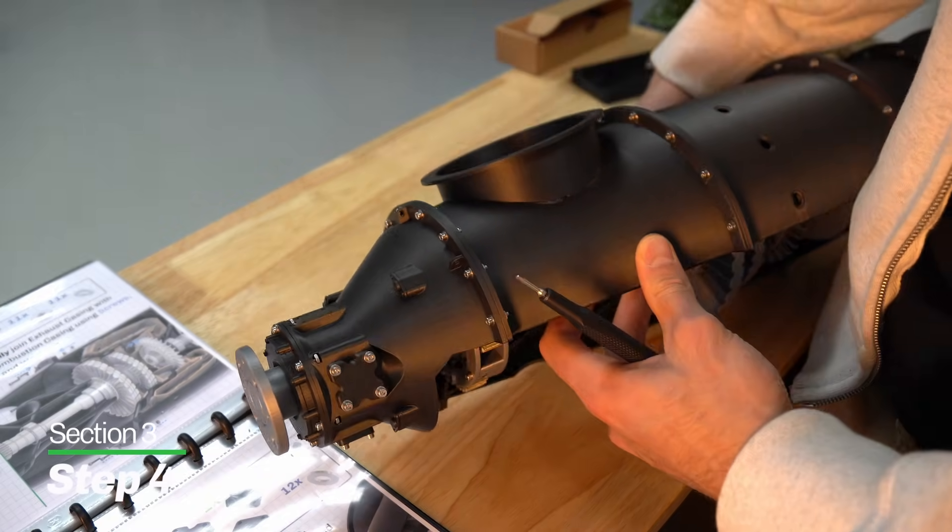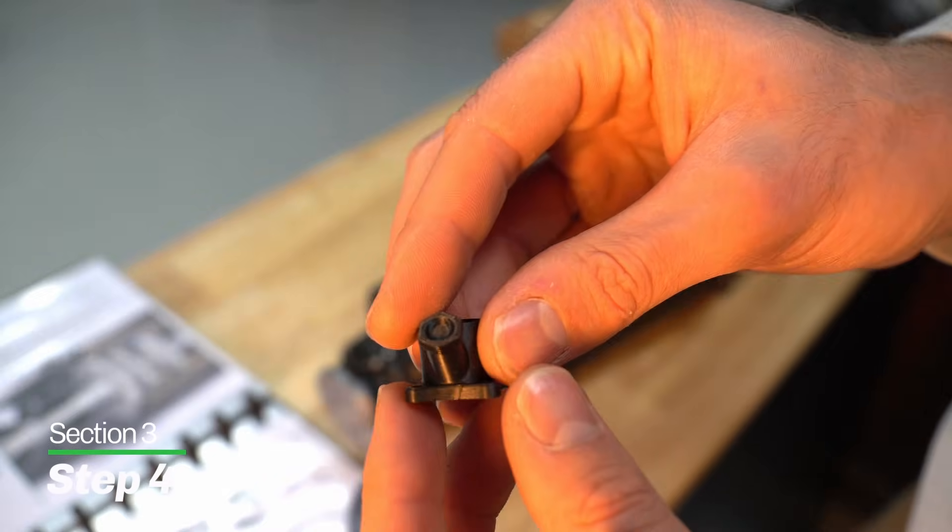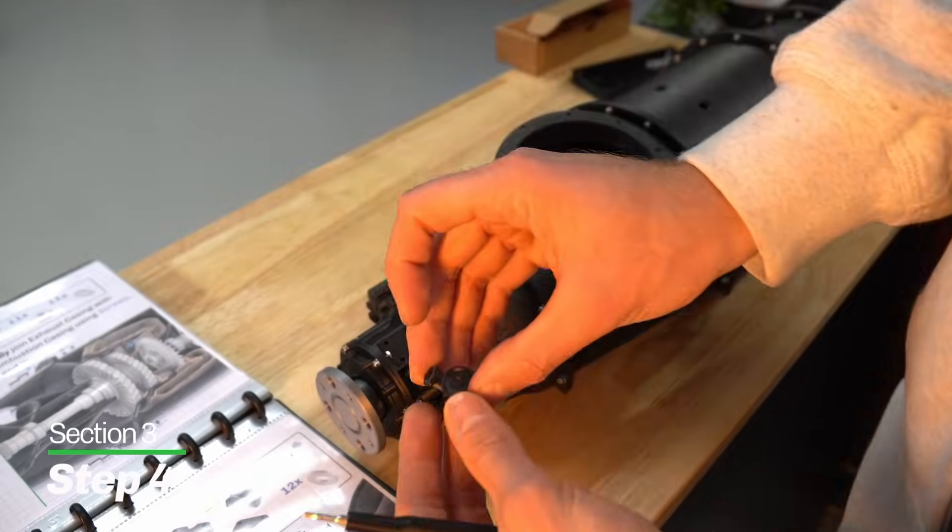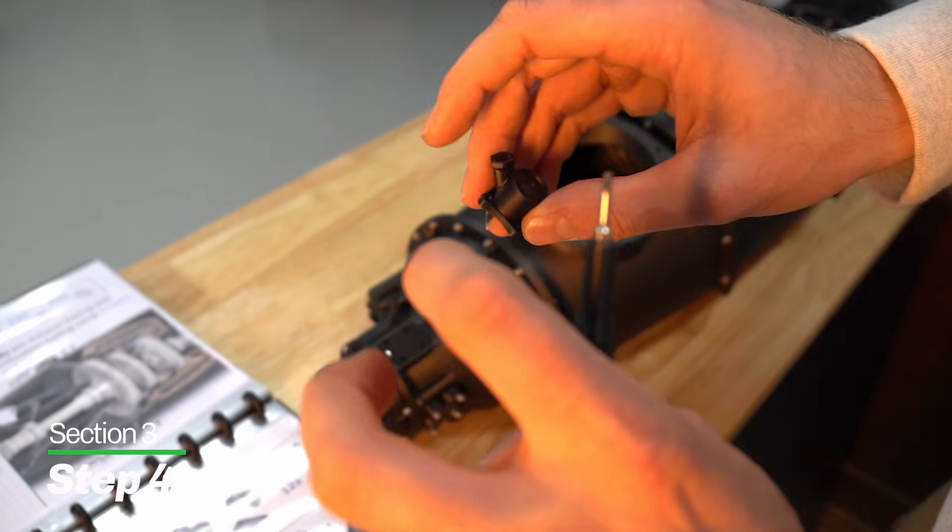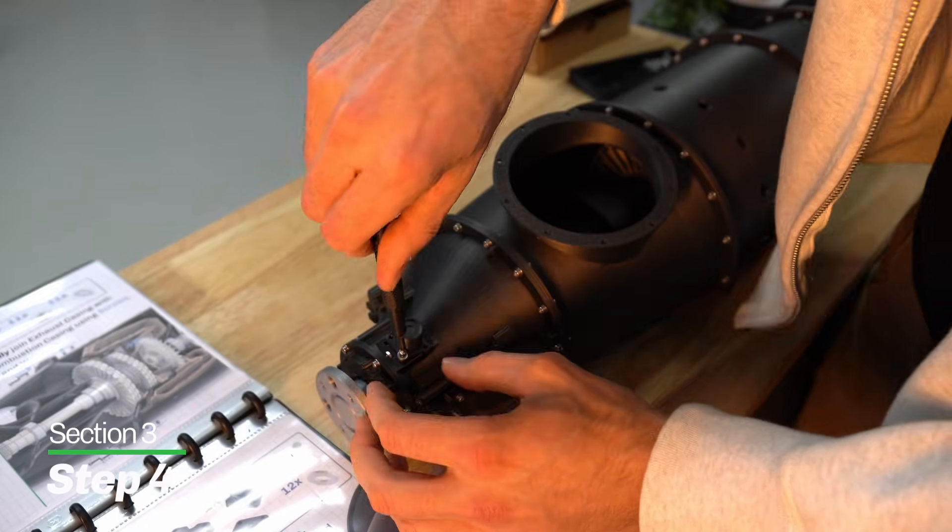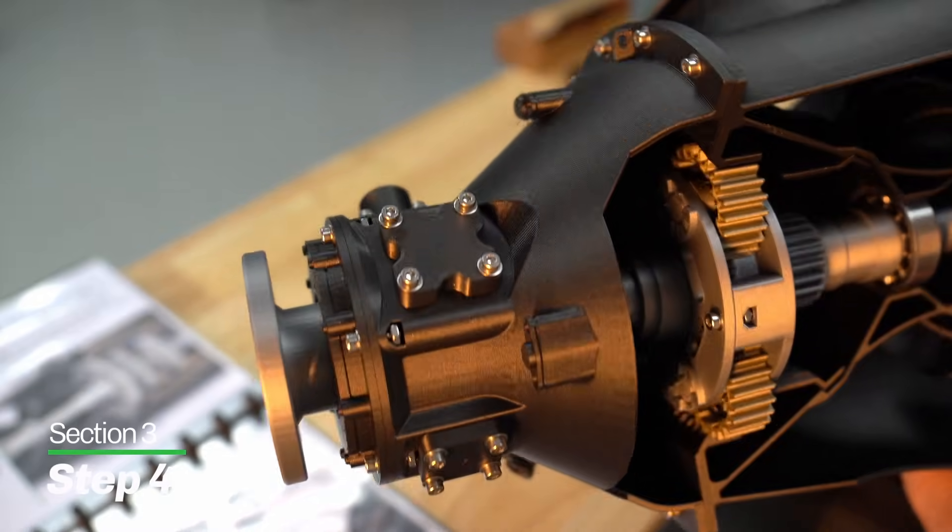We're going to flip this over again, exhaust port upwards, and grab our tack generator and attach it in any orientation. Originally, this element points in this direction, pointing down. So that's what I'm going to do. Again, self tapping, no nuts needed. This is the front accessories done.